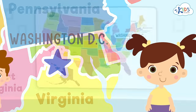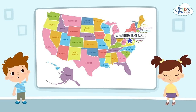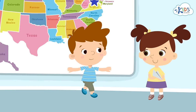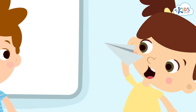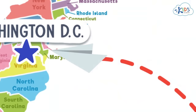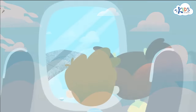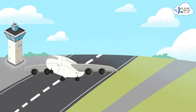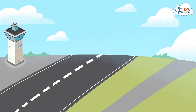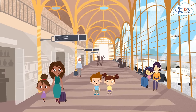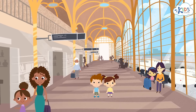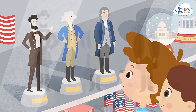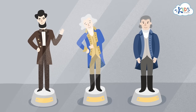Washington, D.C. is the capital of the United States of America. I am so excited that we are flying there today. Me too! Let's go! Washington, D.C. is the city where each U.S. President lives and works. That's why you can see the presidents even at the airport — not in person, of course, but their portraits and statuettes.